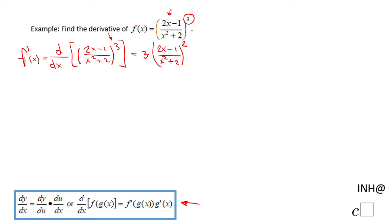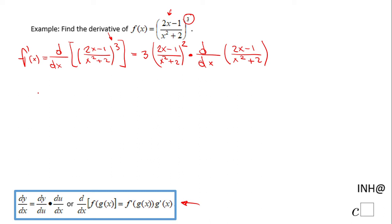This is the power rule applied to the expression. Then, by the chain rule, we also have to take the derivative of the inside function, which in this case is (2x minus 1) over (x squared plus 2). So this is the first step, and now we're going to apply the quotient rule.